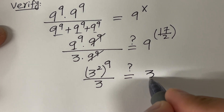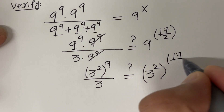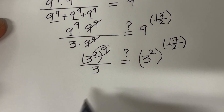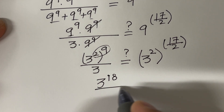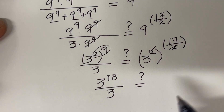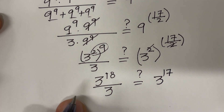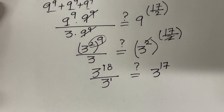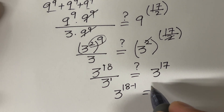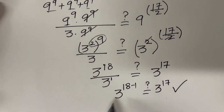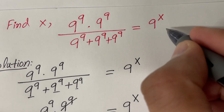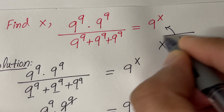The right-hand side is 9, written as 3 raised to the power 2, with power 17 divided by 2 on top. Multiplying the exponents on the left gives 3 raised to the power 18 divided by 3. On the right, the 2s cancel and we get 3 raised to the power 17. Simplifying the left side gives 3 raised to the power 18 minus 1, which equals 3 raised to the power 17. Since 18 minus 1 is 17, this confirms the equation holds. So x is equal to 17 divided by 2.